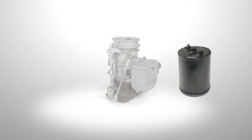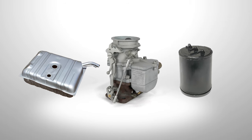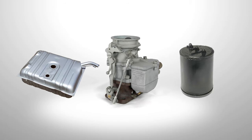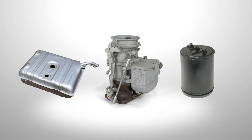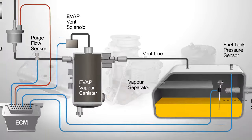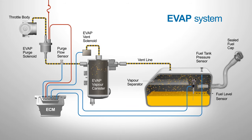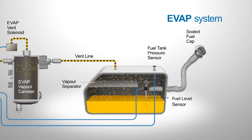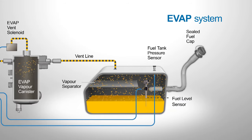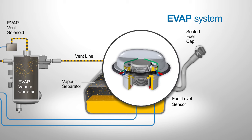EVAP systems have changed over the years from simple float bowl and fuel tank vacuum operated types to fully sealed OBD2 monitored and ECM controlled systems. Fuel filler caps are non-venting and have a positive and negative pressure relief valve built in.